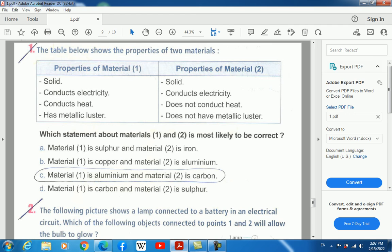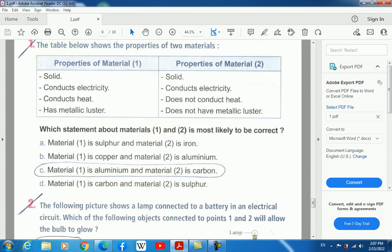The table below shows the properties of two materials. For material 1, the properties are solid, conducts electricity, conducts heat, has metallic luster. Which statement about materials 1 and 2 is most likely to be correct? If we are very careful, we'll find that material 1 is aluminum and material 2 is carbon, because material 1 has the properties of aluminum and material 2 has the properties of carbon.